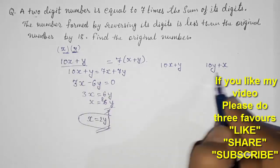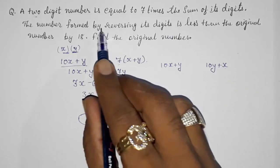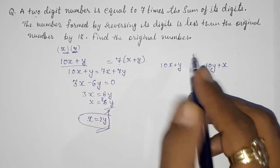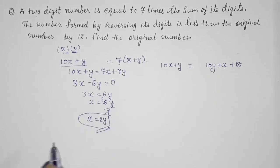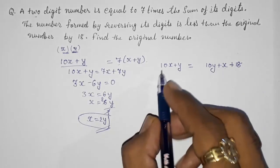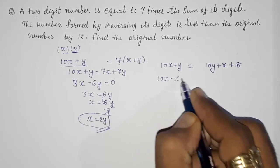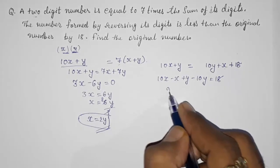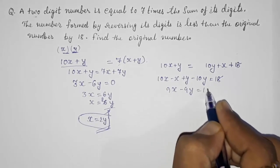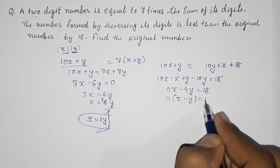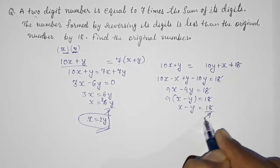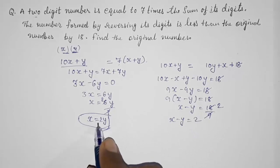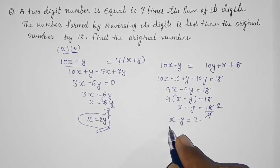Simplifying: 10x minus x plus y minus 10y equals 18, which gives 9x minus 9y equals 18. Taking out 9 common: x minus y equals 2. Substituting x equals 2y from the first equation: 2y minus y equals 2, so y equals 2.